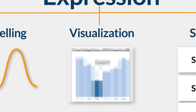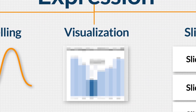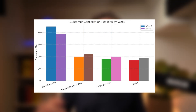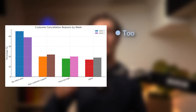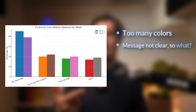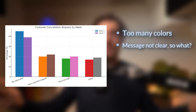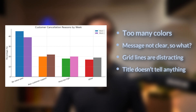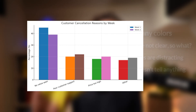I've done that too many times — people saying 'that's pretty interesting' but then leaving the room and nothing happened. And to prevent that, we need visuals. Here are my fast data visualization tips. Please don't do this — can you spot the mistakes? There are too many colors, the message is not clear, people are asking 'so what?', the grid lines are distracting, and the title doesn't say anything. So let's clean it up.